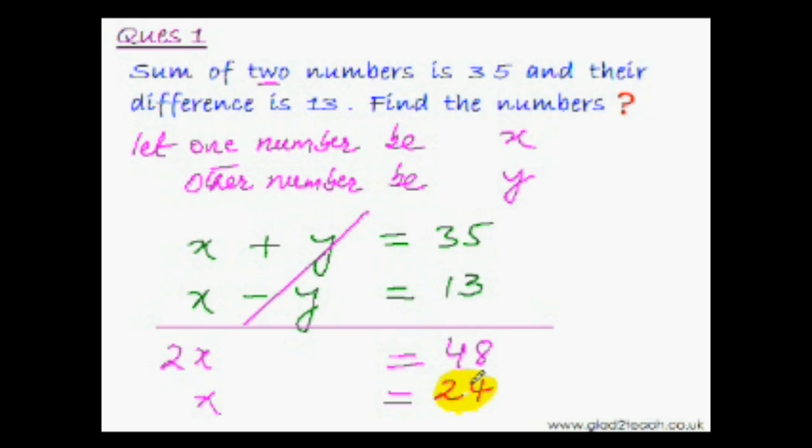And we have got one unknown number. Now put this value of x in this equation and find the value of y. So y equal to 35 minus 24. That is 11. So the question is solved. Y is equal to 11 and x is equal to 24.